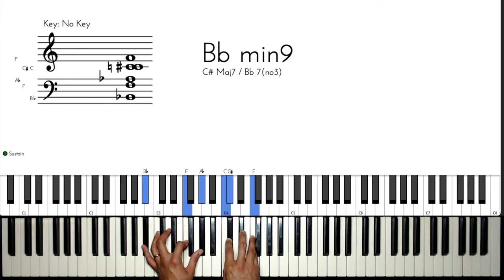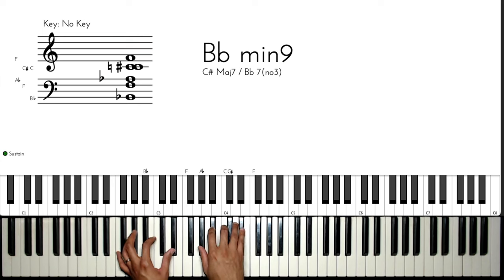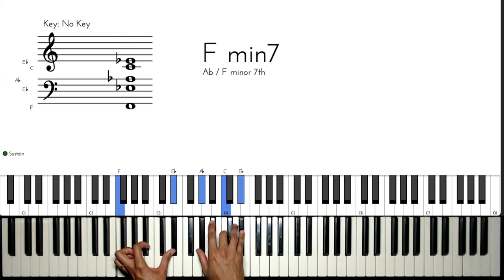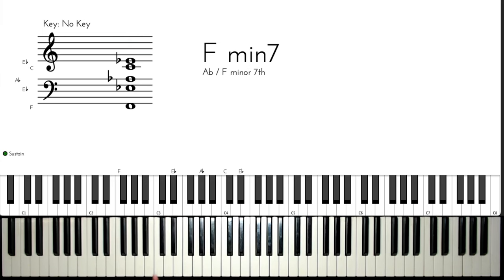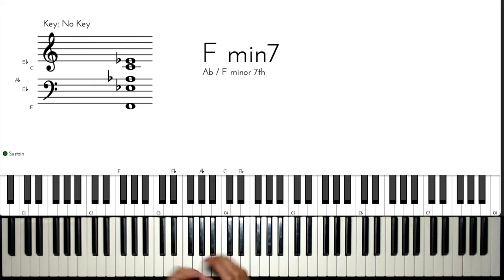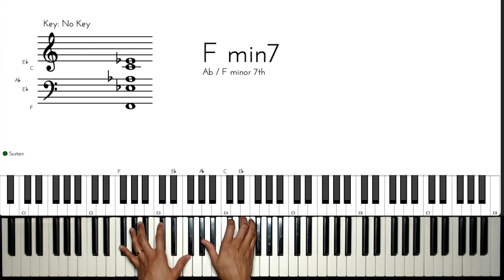The next chord is a three — 'whom shall I be afraid' — which is an F minor seven. But I like substituting this three for a five. I'll show you how I substitute it and what passing chord I use, so I'll play starting from the beginning.